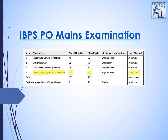Next we will talk about the IBPS PO Mains exam. There are four sections. For reasoning, there are 45 questions worth 60 marks, and you get 60 minutes. Next is English language, with 35 questions worth 40 marks and 40 minutes. Next is data analysis and interpretation, in which you have 35 questions worth 60 marks, and you have to cover this in 45 minutes.